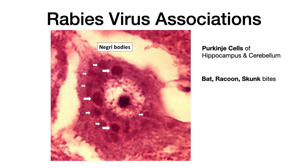When it comes to the rabies virus, you want to be able to recognize this image either visually or by description. When you see what those white arrows are pointing to, these are eosinophilic cytoplasmic inclusions, or Negri bodies. As you can tell from the image, they tend to be very well demarcated and circular or oval.